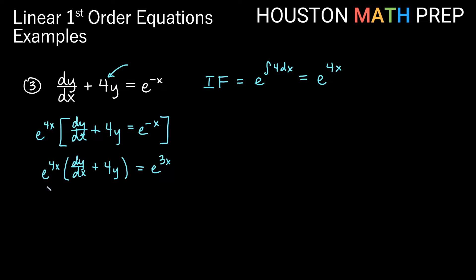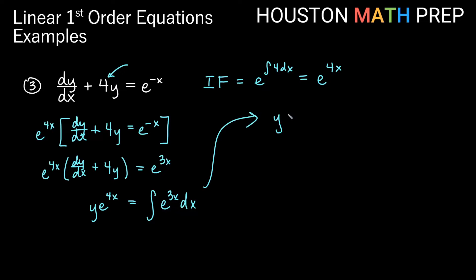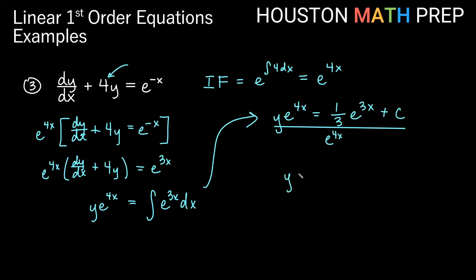Just like before, the left side is a product rule — taking the antiderivative gives y times the integrating factor, y times e to the 4x. On the right we integrate e to the 3x dx. The reciprocal of 3 comes out, giving one third e to the 3x plus c. Now dividing everything by e to the 4x: the first term becomes one third e to the 3x divided by e to the 4x, which is one third e to the negative x, and the constant term becomes c e to the negative 4x.